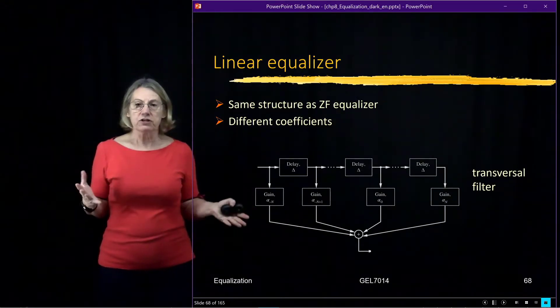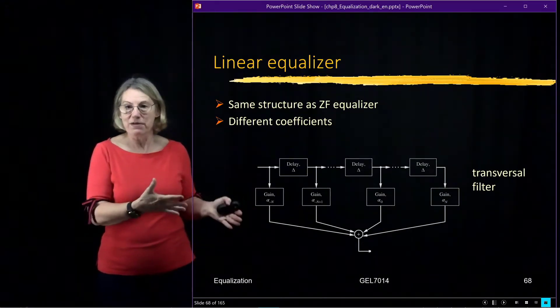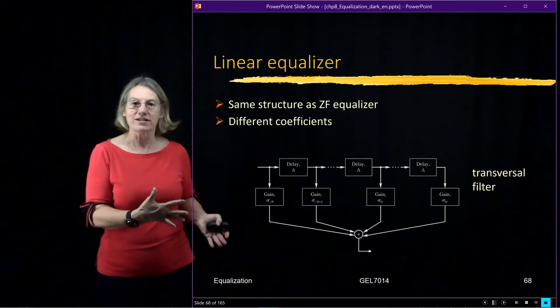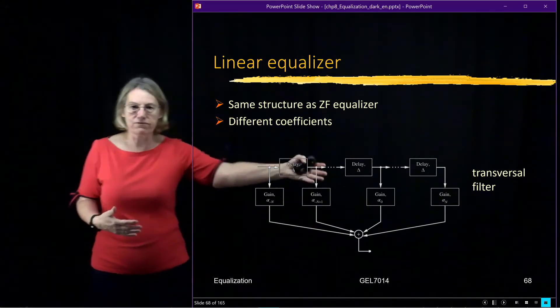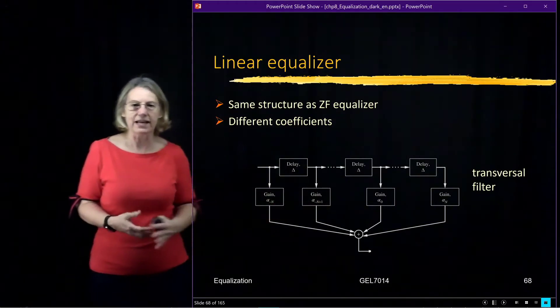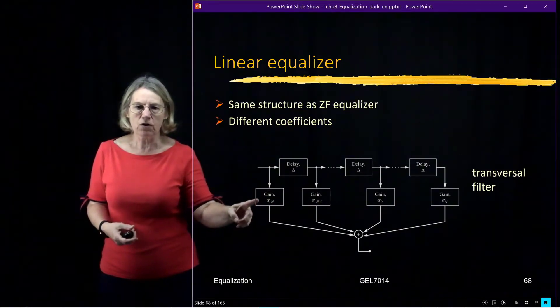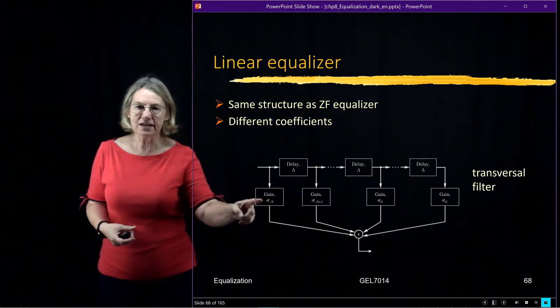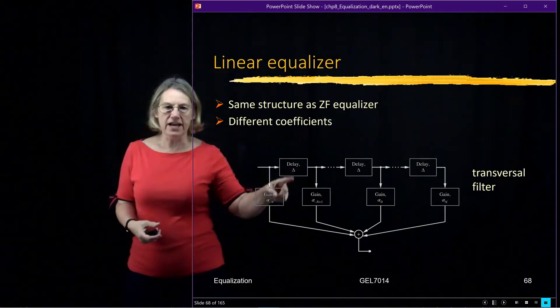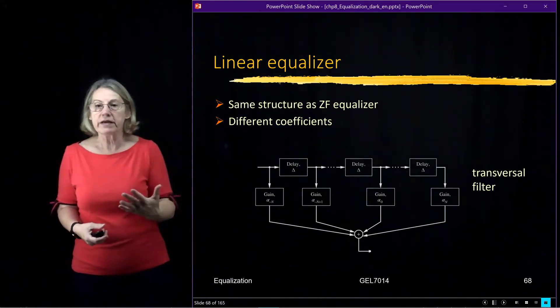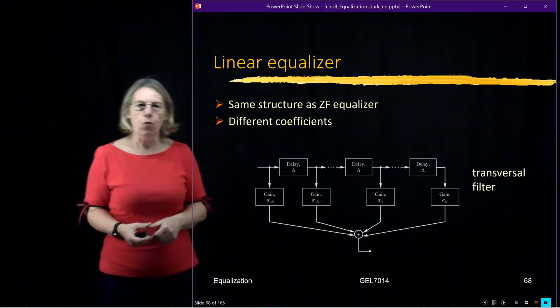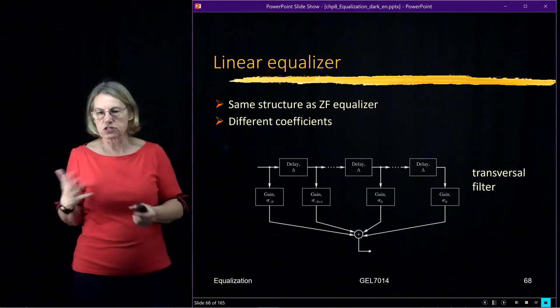So in terms of structure, it looks exactly the same as the zero-forcing equalizer. It's another version of a transversal filter, which we also call the tap delay line. There are coefficients in the filter that we will be seeking to find, and there's delays, and the number of delays, the number of taps, is going to determine how effective one MMSE equalizer is versus the other.